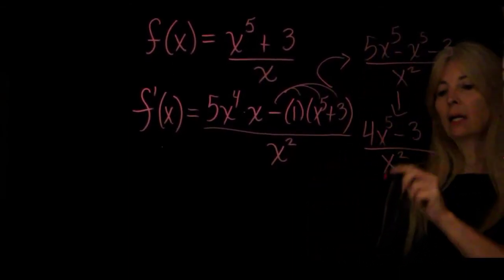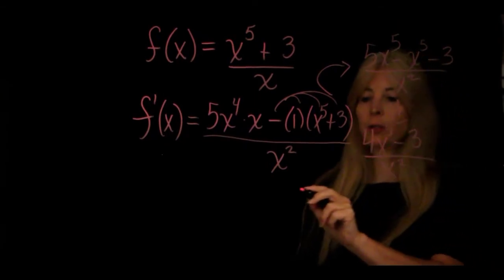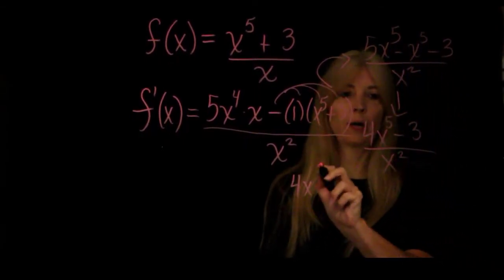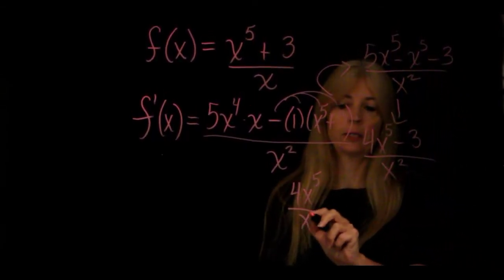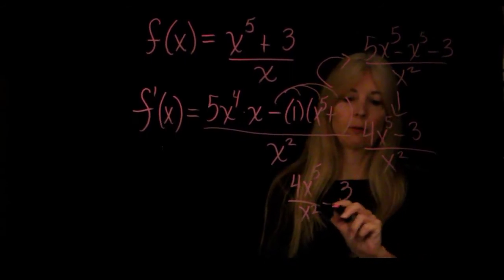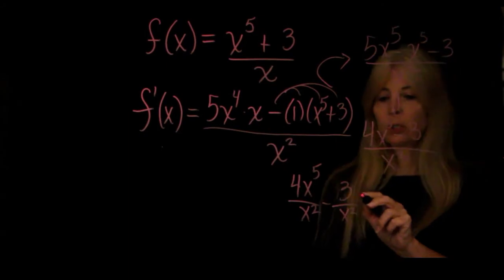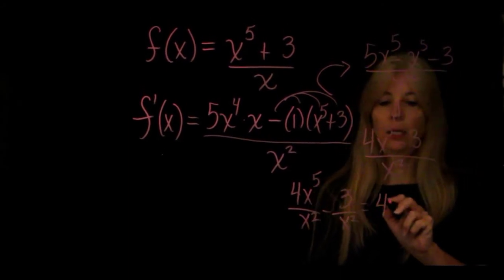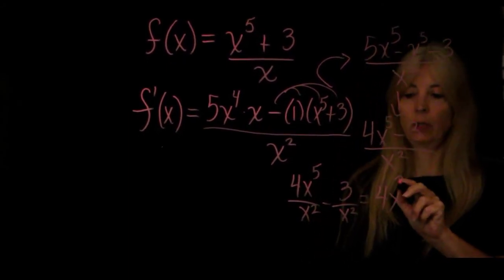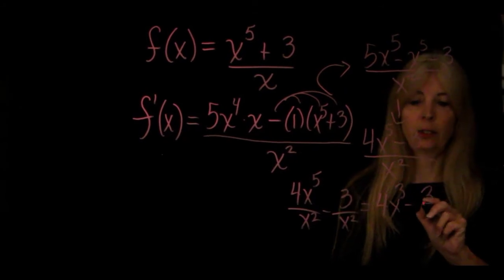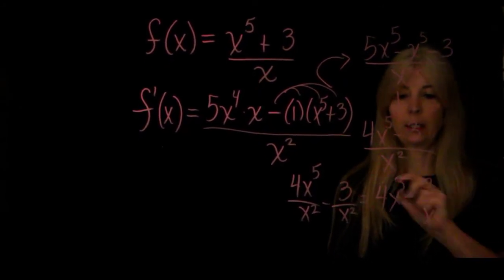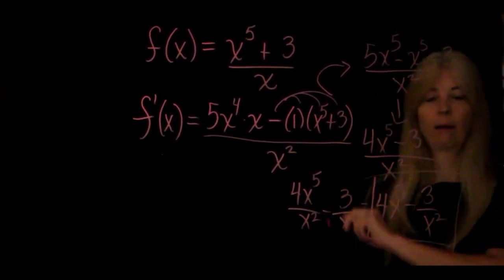And then I could actually turn this fraction into 4x to the fifth over x squared, minus 3 over x squared. I just separated the fraction, so now I can do a little bit of canceling and get 4x to the third, minus 3, over x squared, for my final answer.